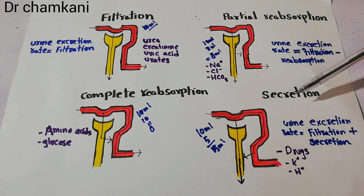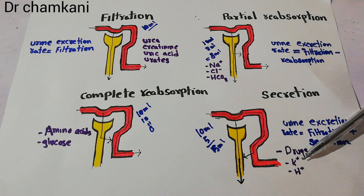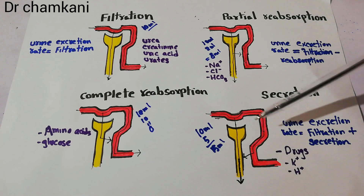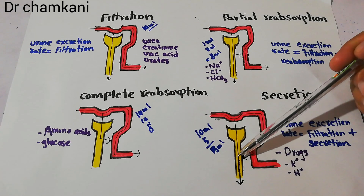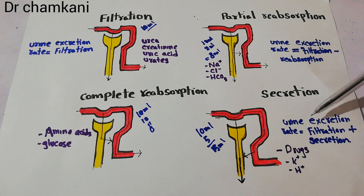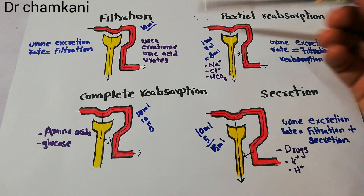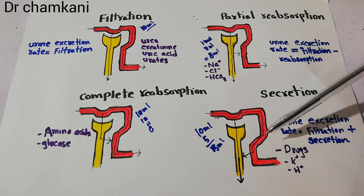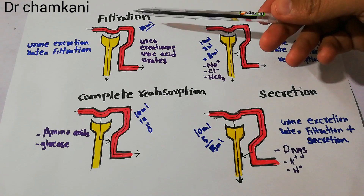Some substances depend for their excretion not only on filtration but also on secretion. Examples include drugs, potassium, and hydrogen ions. They are not only filtered at the Bowman's capsule but are also secreted from the peritubular capillaries into the nephron tubules. So their urine excretion rate is filtration plus secretion rate. Their urine excretion rate of every substance ultimately depends on whether it is reabsorbed, whether it is secreted, and whether its filtration is high or not.